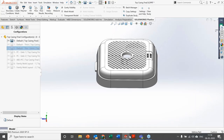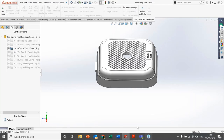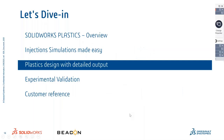Once all settings are done, set the injection location and click Run. The analysis will run and results will appear in terms of fill time, cool time, warp time, and pack time. Let us go back to the presentation to understand what kind of outputs you get from SOLIDWORKS Plastics.